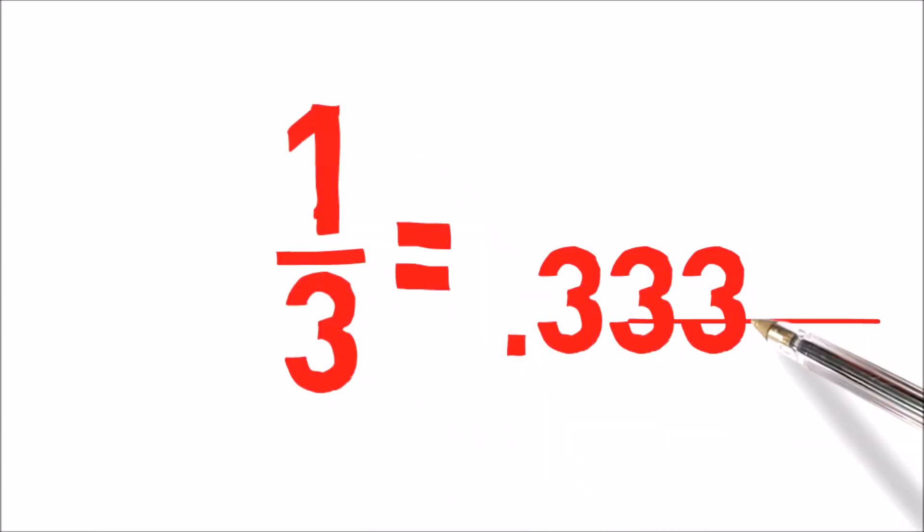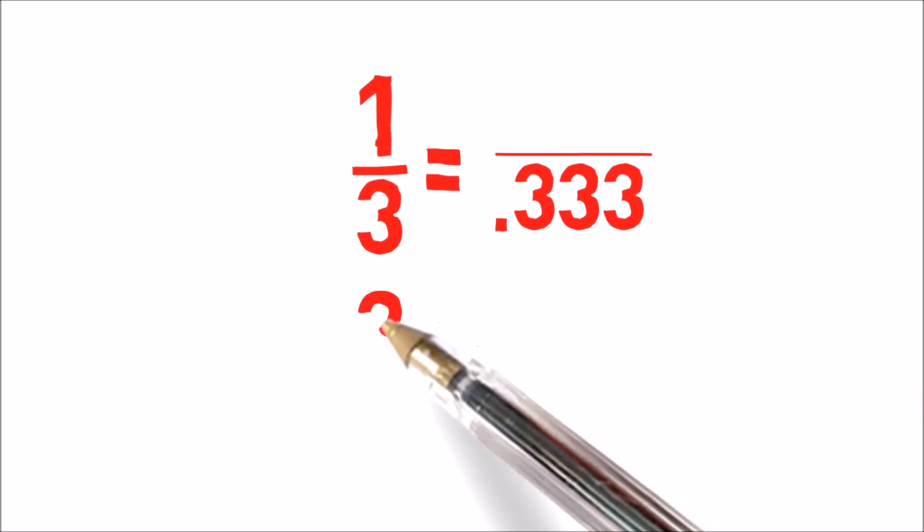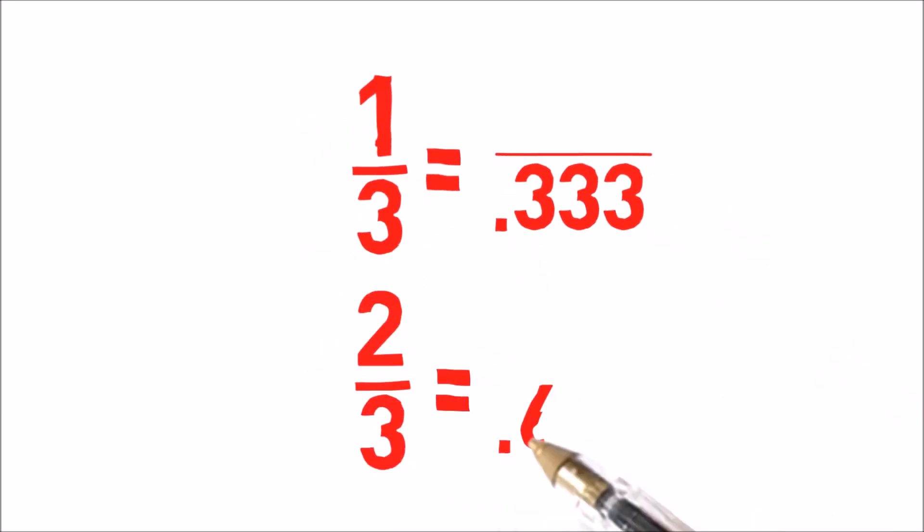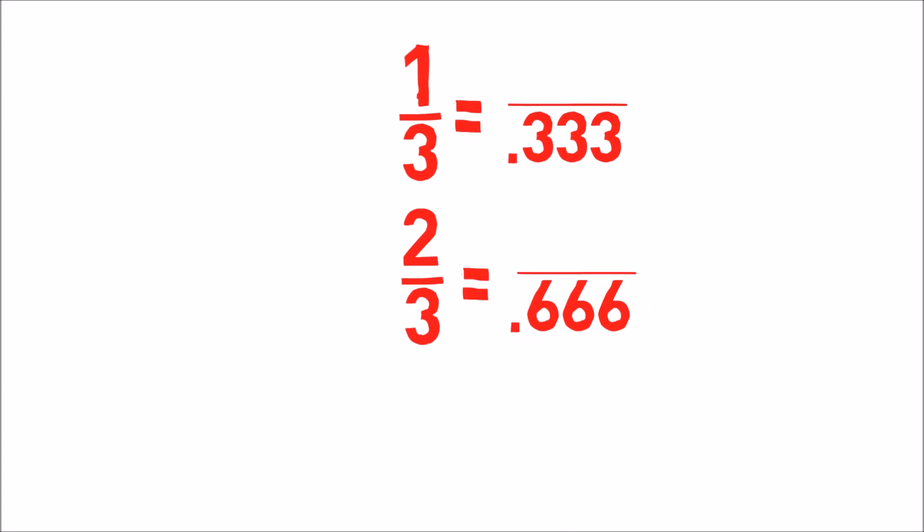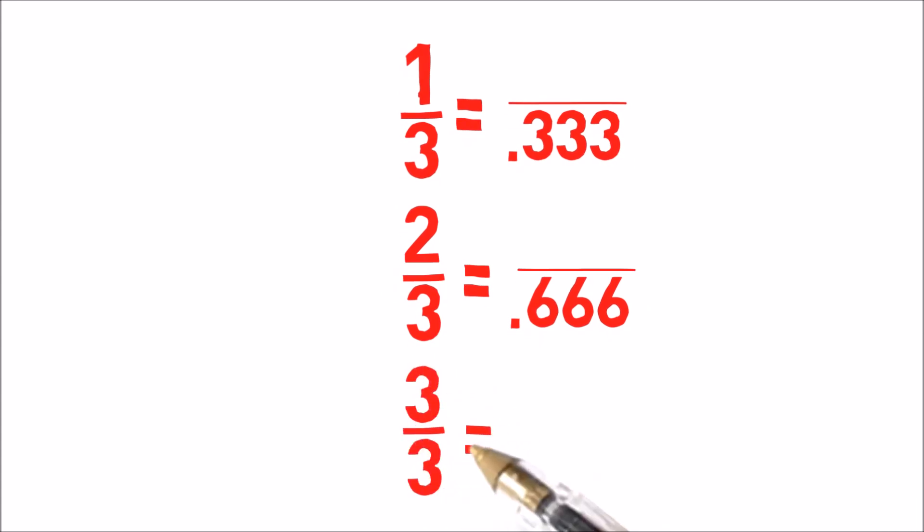1 over 3 equals 0.333 repeating forever. 2 over 3 equals 0.666 repeating forever. And 3 over 3 equals 1.